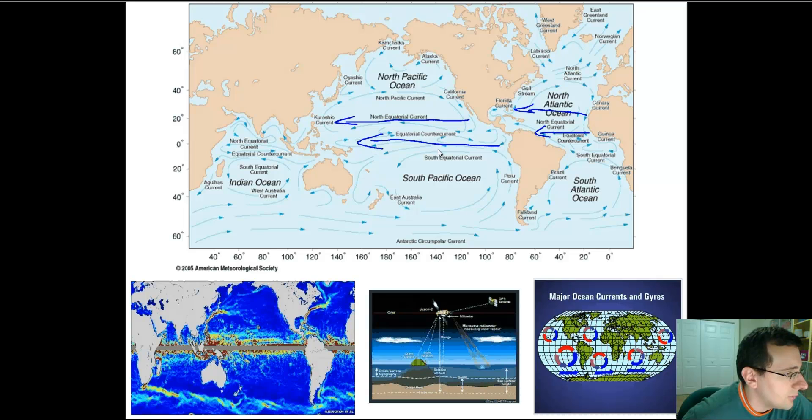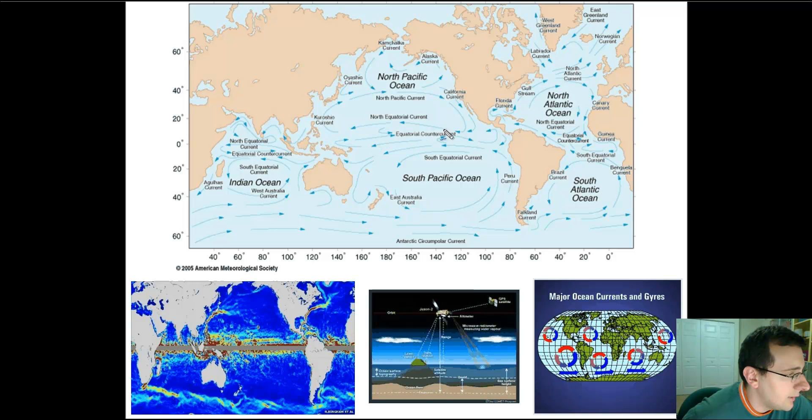In between them, there's a weaker counter current that returns water to the other side. The equatorial counter current is basically caused because when the water hits the continents, it's forced to go backwards. That's the whole thing about continents serving as a barrier.